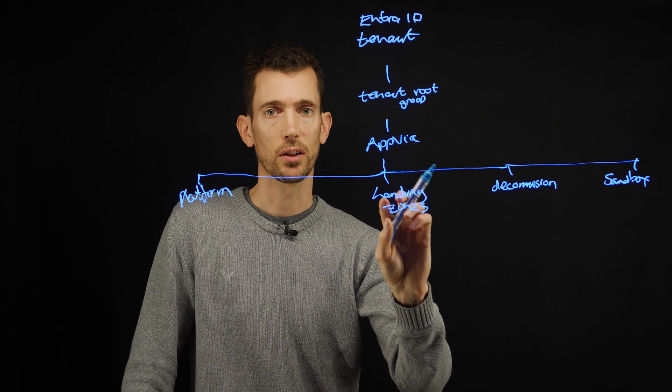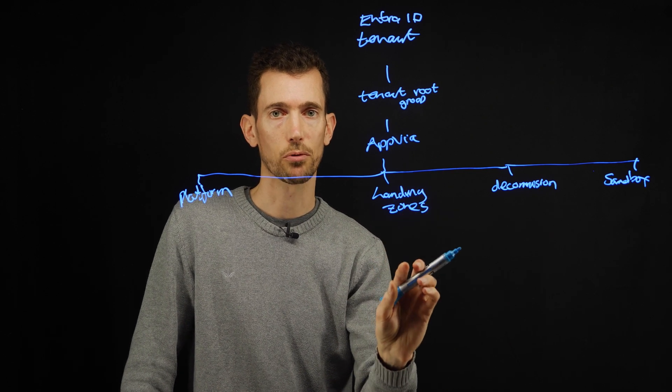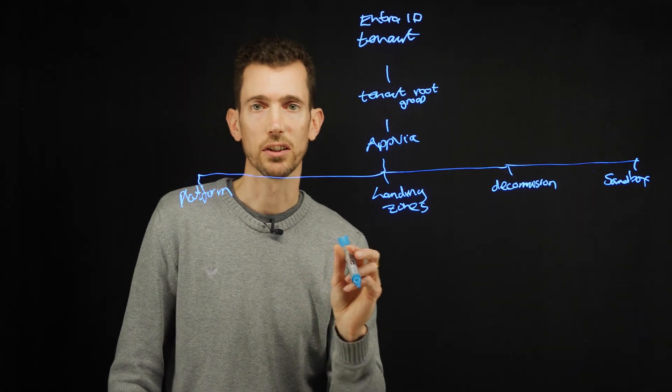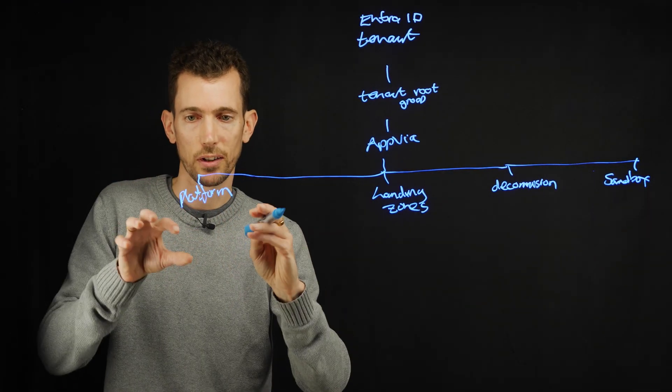Things that are no longer required get moved to decommission before they get rid of it. Landing zones is where your different application subscriptions would live. And then platform is where your shared services are. So let's go down to the next level.